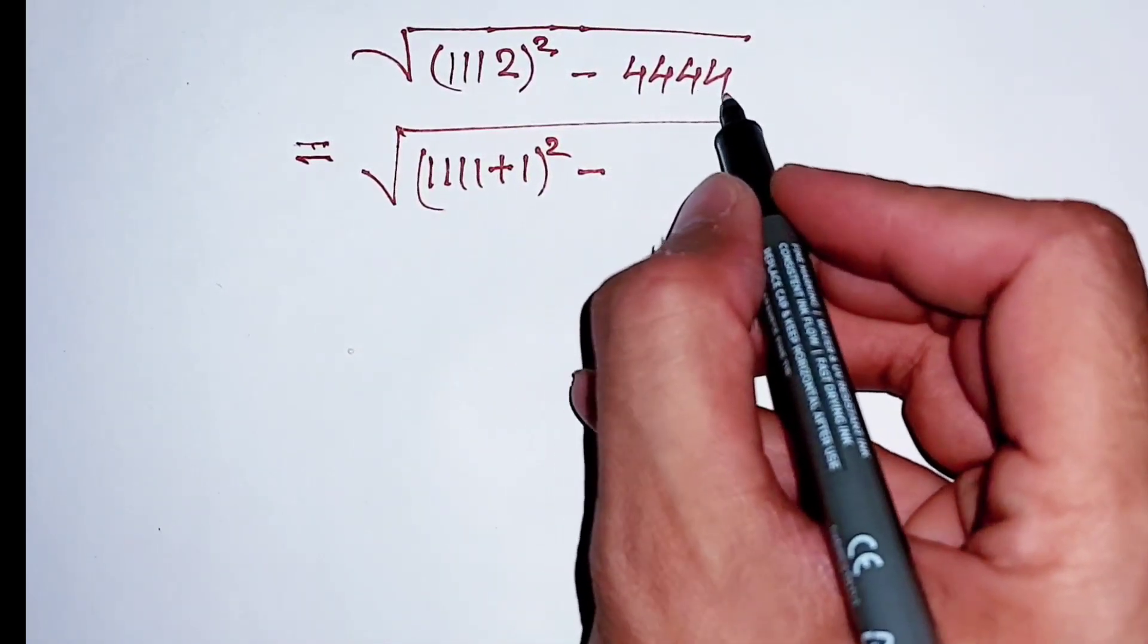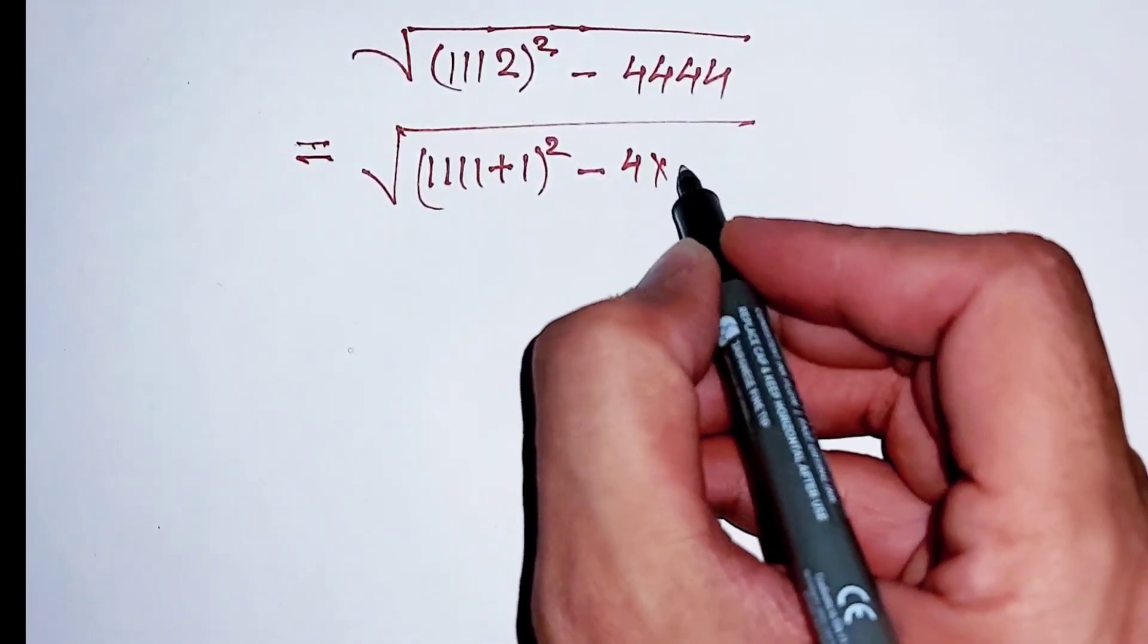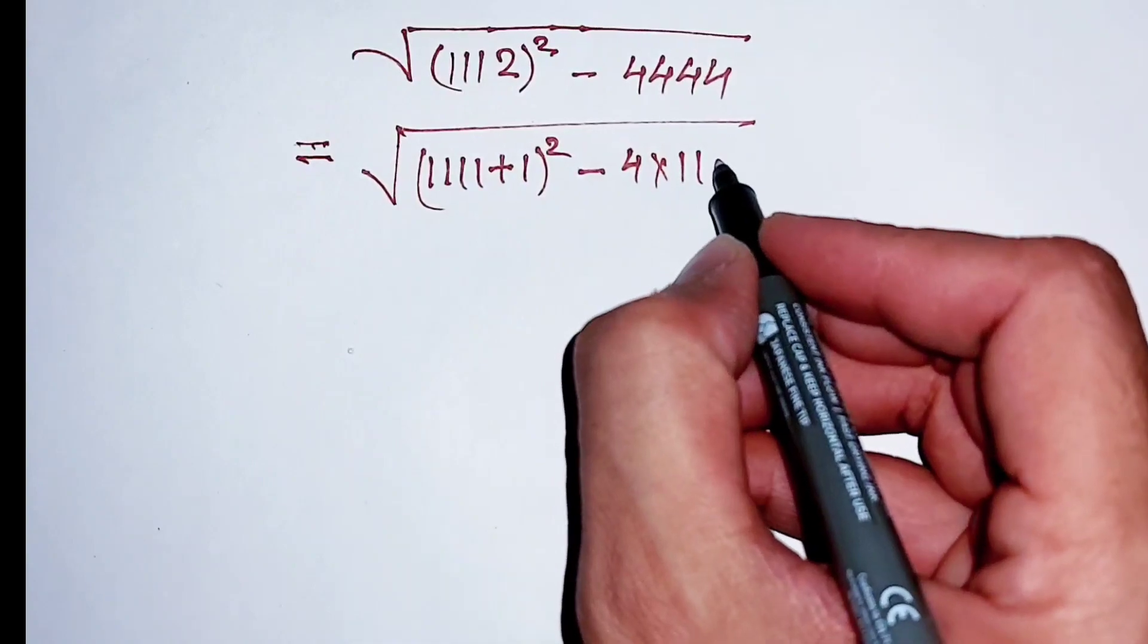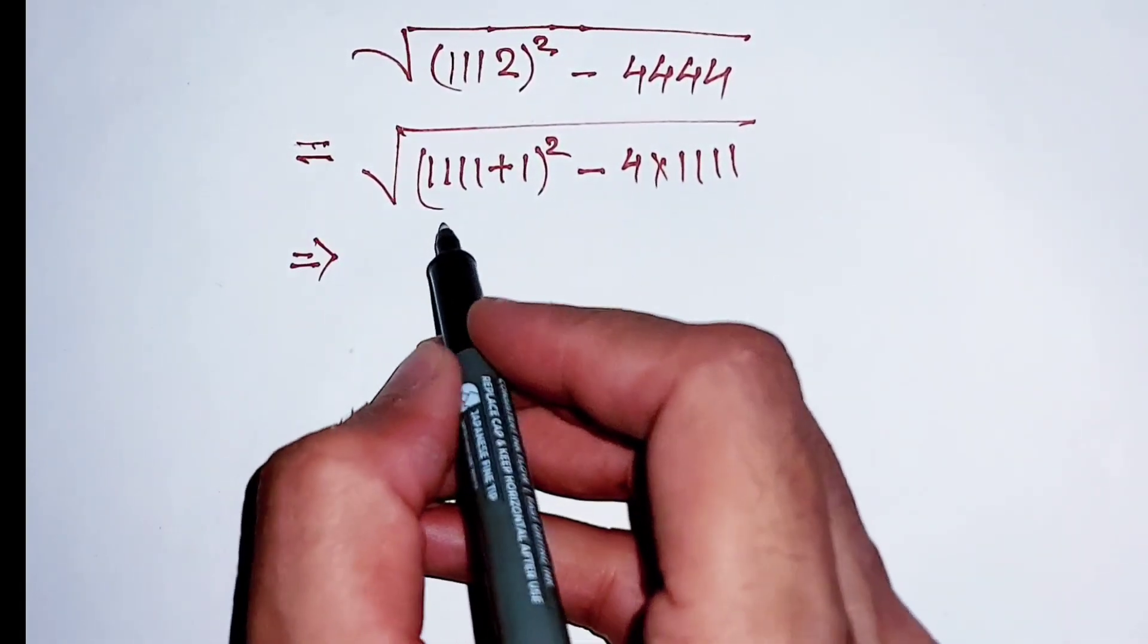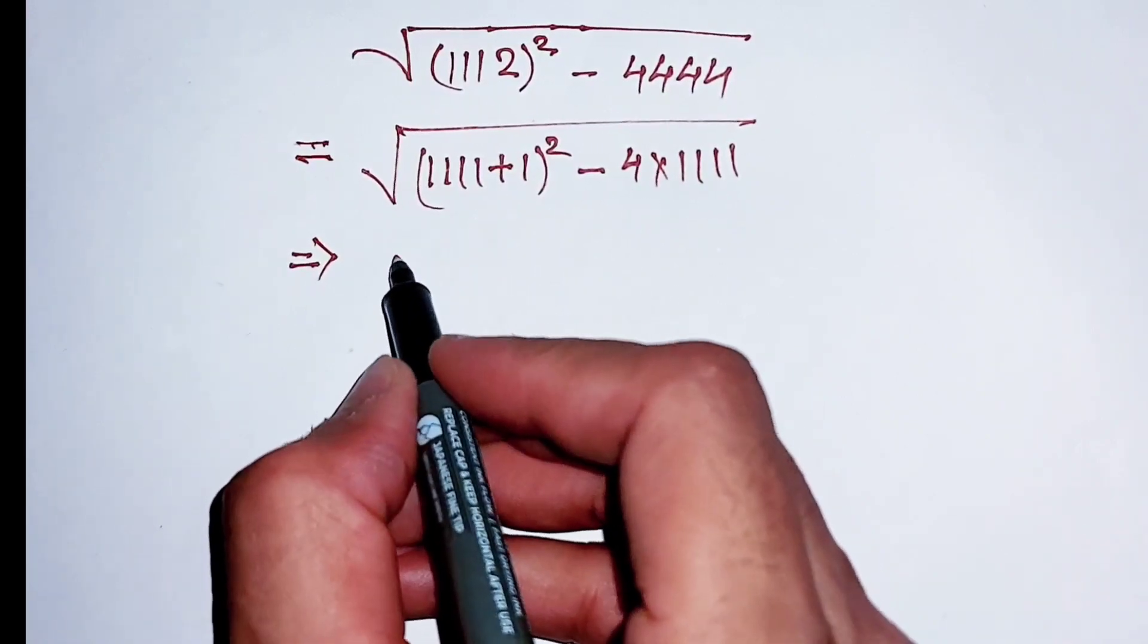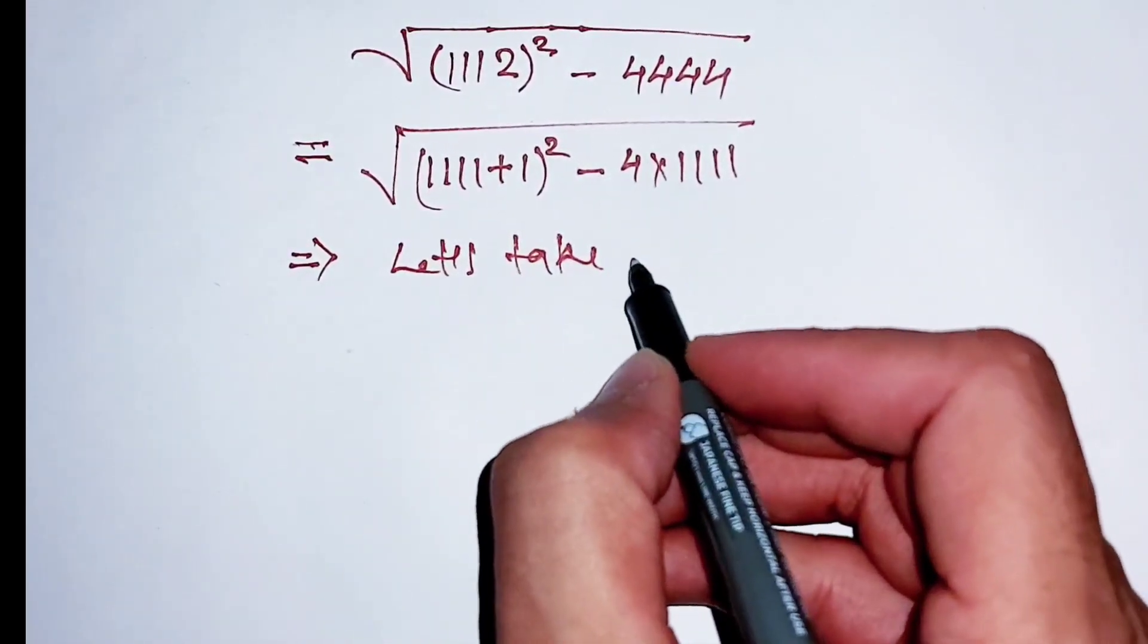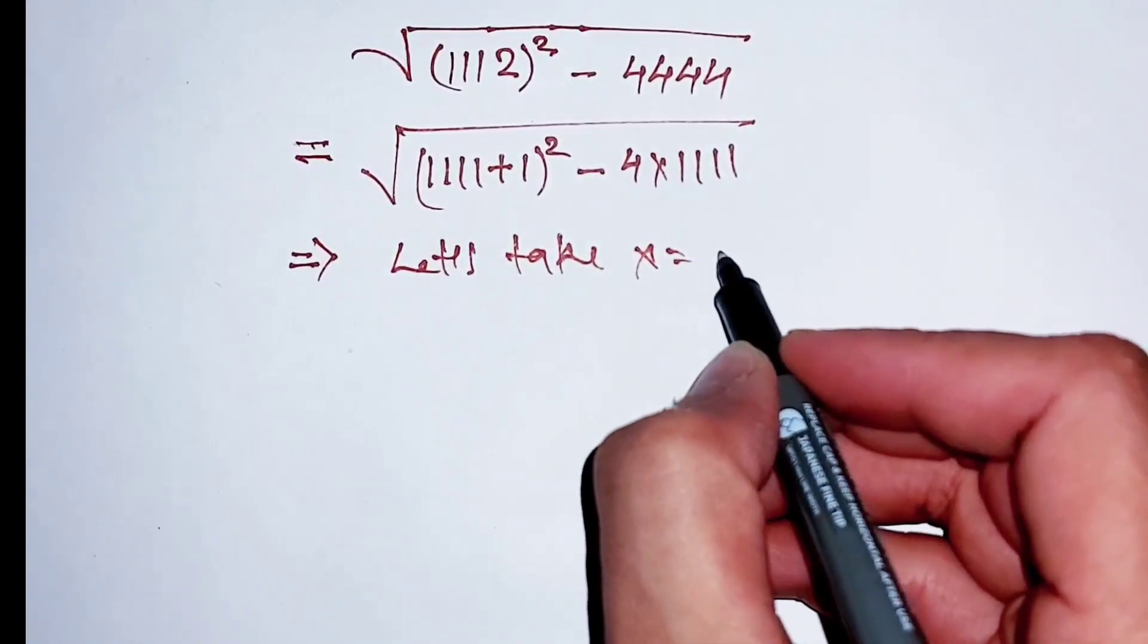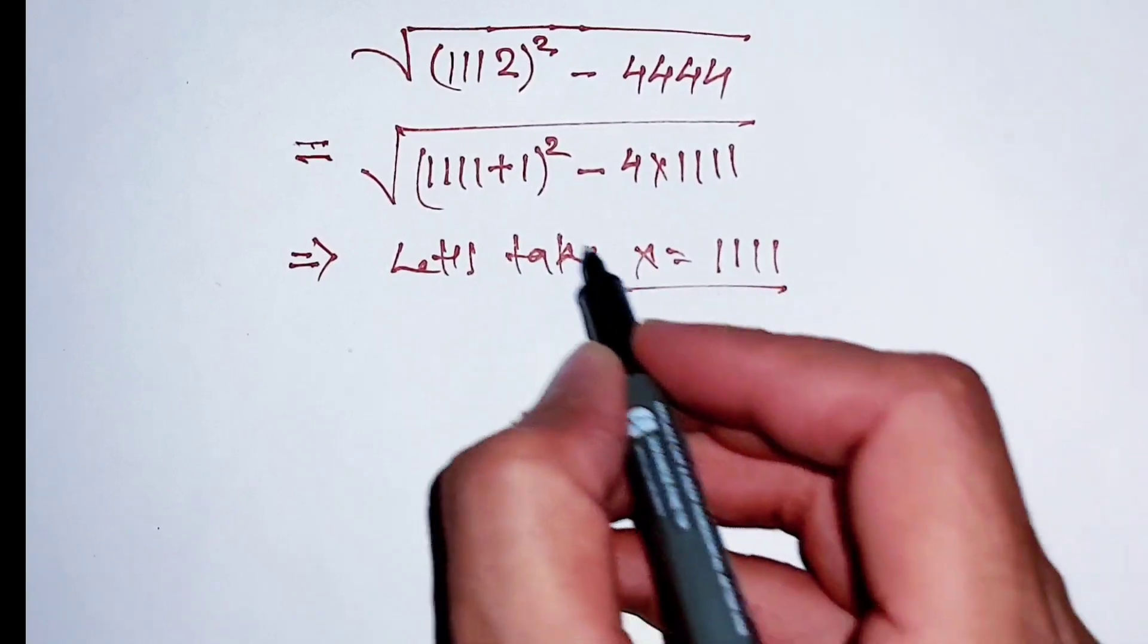This 4444 can be written as 4 multiply 1111. Now let's take x equal to 1111 and put this value here.